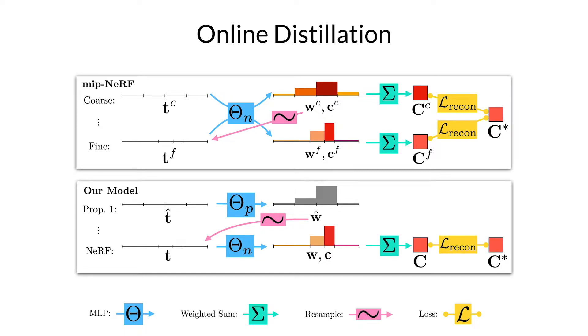We're going to supervise this one rendering to be close to the true pixel color taken from an input image and instead of supervising the proposal MLP to accurately reconstruct the image we're going to supervise its output weights to be consistent with the output weights from the NERF MLP. This setup means that we can have a very small proposal MLP which we query very often and a very large NERF MLP which gets queried relatively few times.